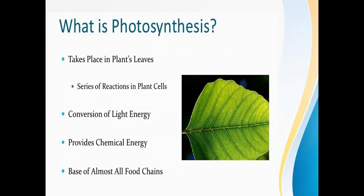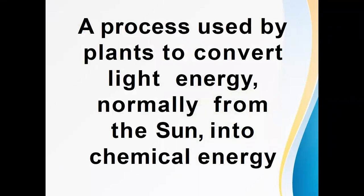The third characteristic of photosynthesis is that it is a conversion of light energy into chemical energy, and it is the basis of almost all food chains. We can define photosynthesis as a process used by plants to convert light energy — normally from the Sun — into chemical energy.